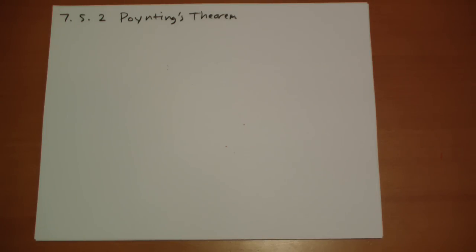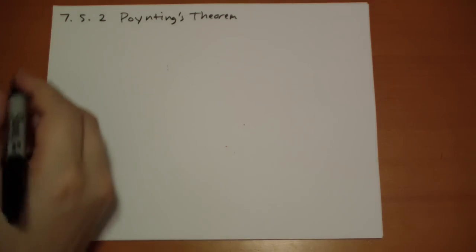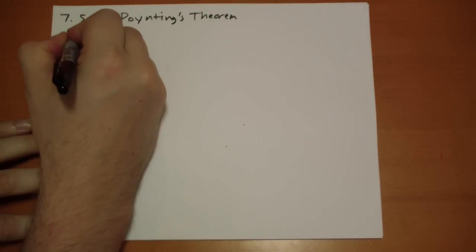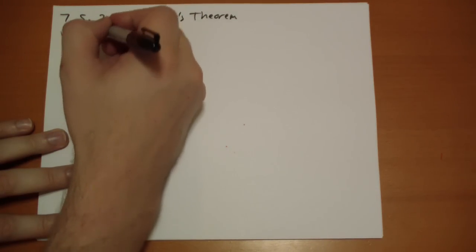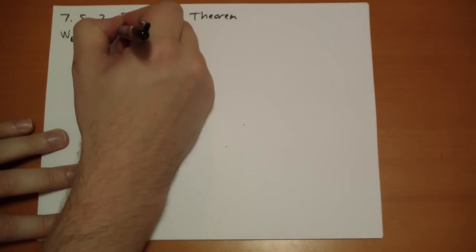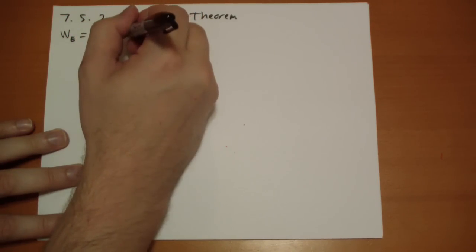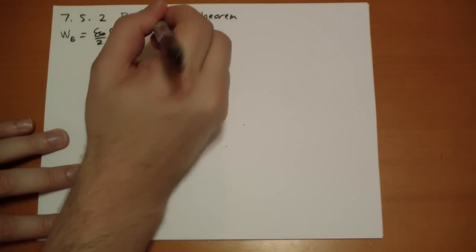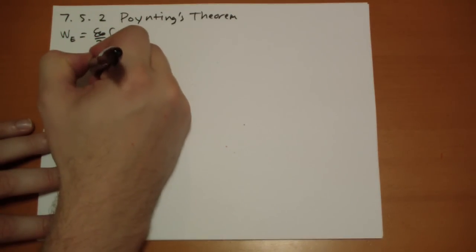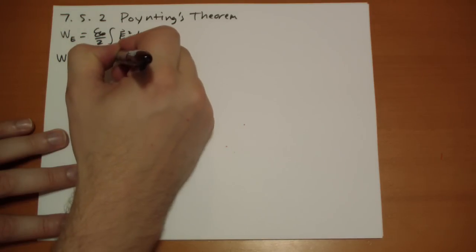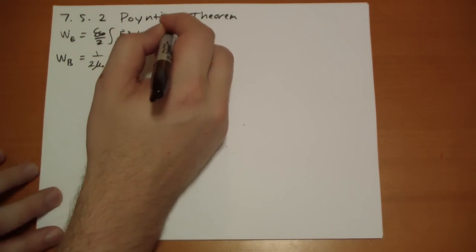When we look at the energy stored in the field in electrodynamics, we're going to compare it to the energy stored in the field in electrostatics, or statics in general — magnetostatics and things like that. We found before that the work it takes to build up an electric field is (ε₀/2) times the integral of E², that's E·E, dτ. And the work it takes to build up a magnetic field is 1/(2μ₀) times the integral of B² dτ. Nice parallel there.